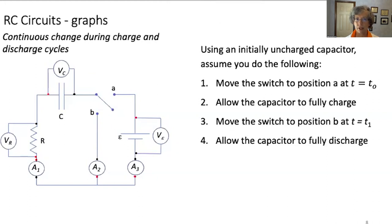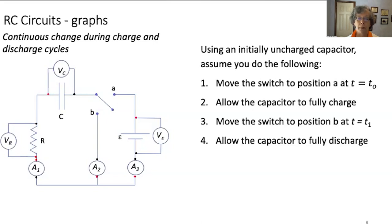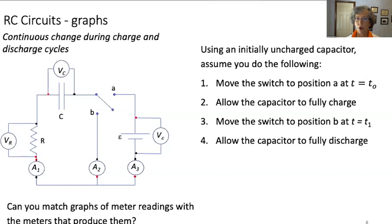We've been looking just at the initial and final conditions of these capacitors. Now let's take a look at the entire charge and discharge cycle — this will be easiest if we look at graphs. Let's assume we take an initially uncharged capacitor and move the switch to position A to charge the capacitor at time T0, keeping the switch in place long enough to allow the capacitor to fully charge. Then we move the switch to position B at time T1 and allow the capacitor to fully discharge. During this process we take probeware and graph the data from the meters across the capacitor and resistor and also the ammeters. I'm going to show you three graphs and see if you can match them with the meters that produce them.